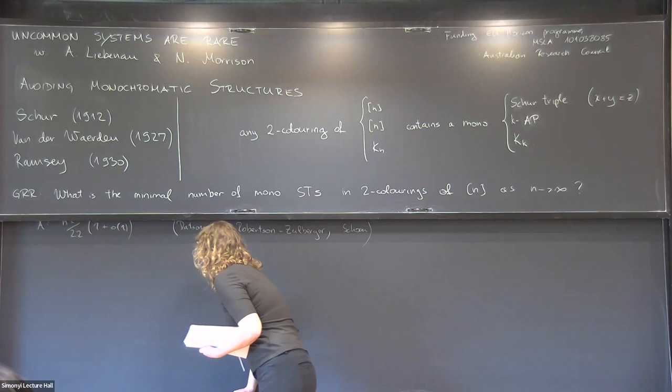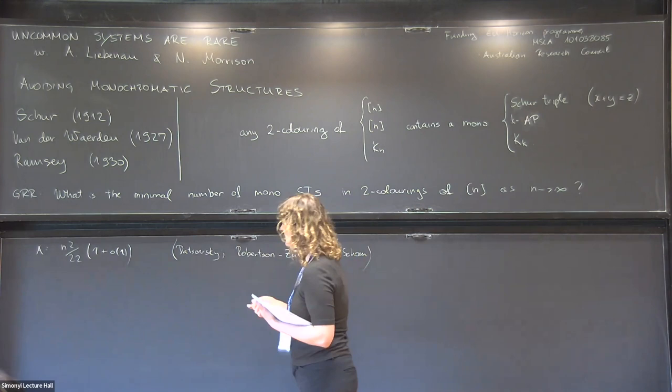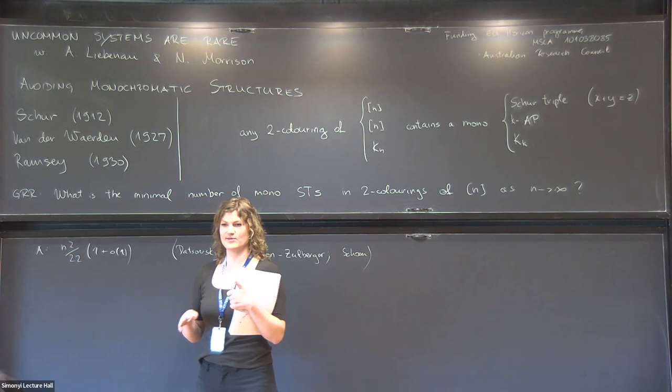In general, this question for arbitrary linear patterns is difficult. What we'll do is two things: first, we'll work in an abelian group from now on, which makes questions somewhat simpler but also allows more general questions. Second, we'll ask: when is the random coloring optimal?